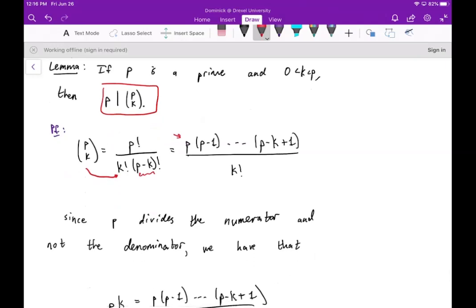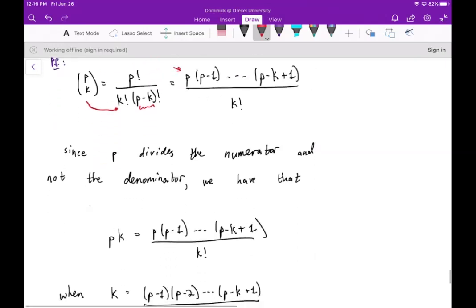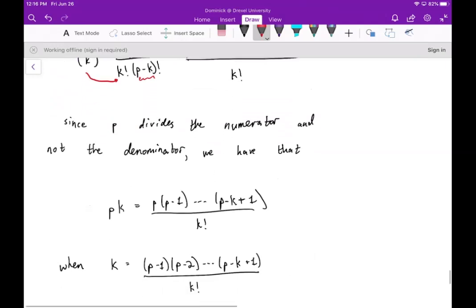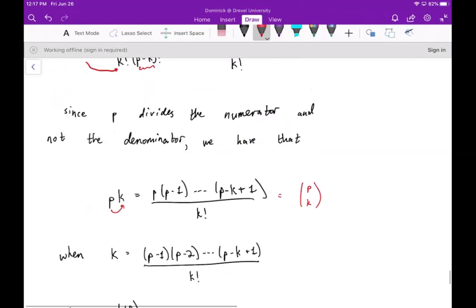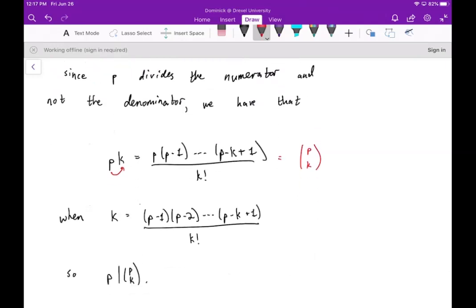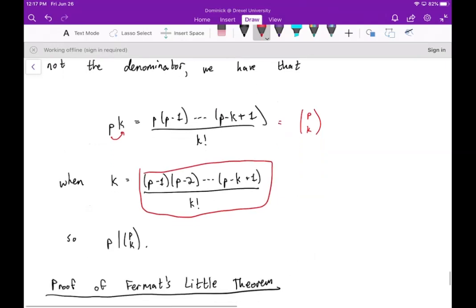Now, P divides the numerator and not the denominator, right? So we get that P times an integer K is equal to this thing that we have, right, which is P choose K. Once we simplified it, K is just this integer made by these factorials here. So then we get that P divides P choose K.